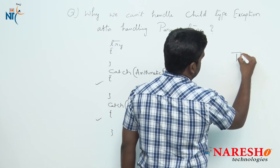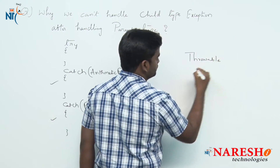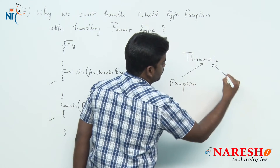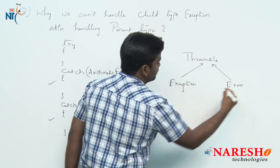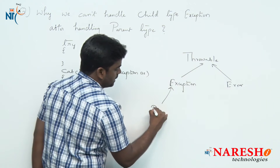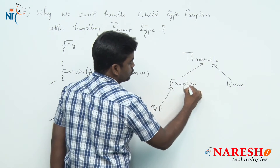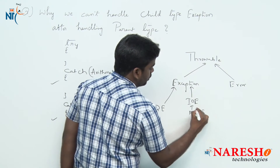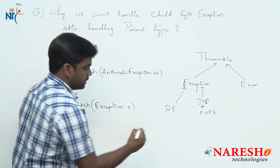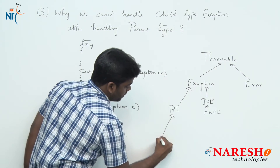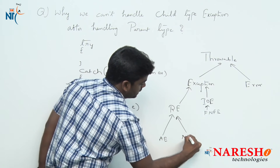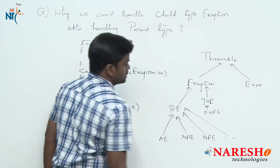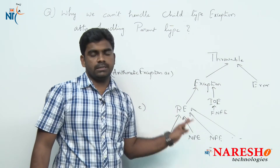To understand clearly, here is the hierarchy: Throwable has two subclasses — Exception and Error. Under Exception, there is RuntimeException and also IOException, FileNotFoundException, and others. Under RuntimeException, there are ArithmeticException, NullPointerException, NumberFormatException, ArrayIndexOutOfBoundsException, and many more.